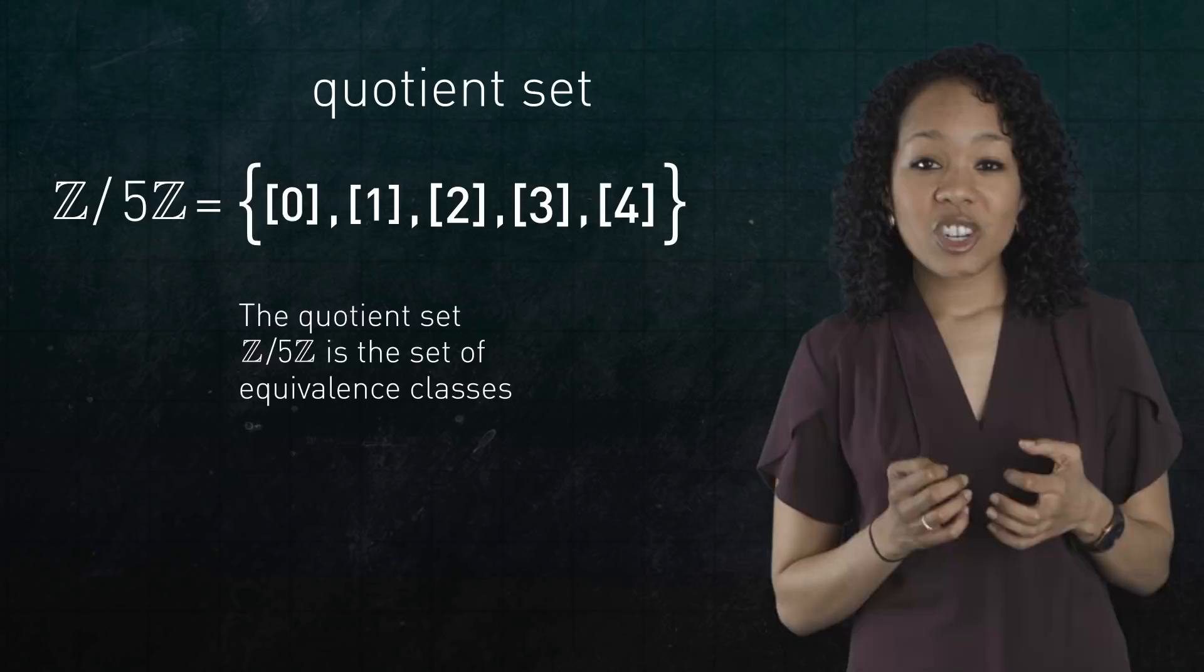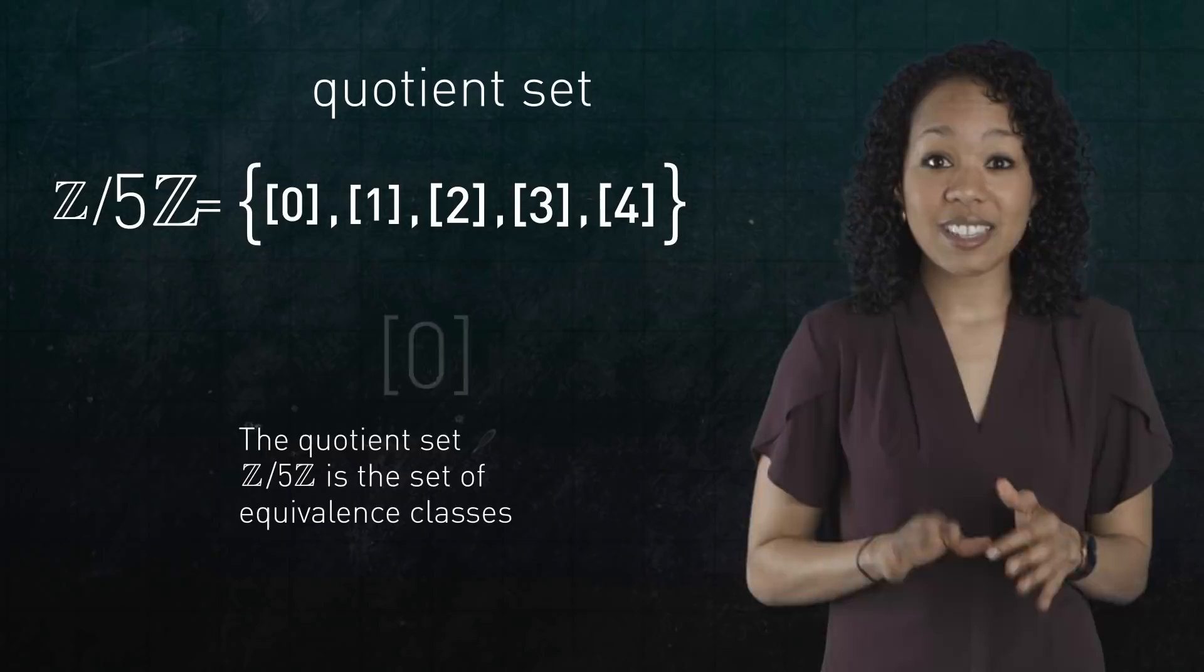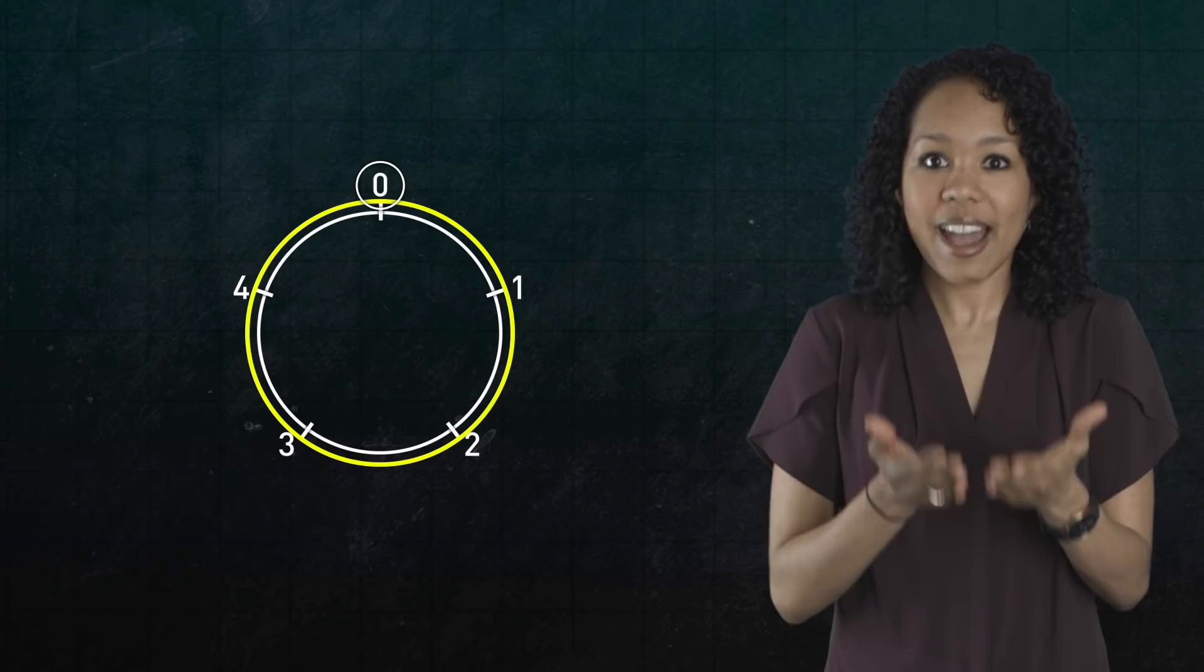By organizing the integers according to their divisibility by 5, we are essentially dividing out the integers by all multiples of 5, 5z. But remember, 5z is really the equivalence class 0. So in that sense, we're dividing by 0. After all, in modular arithmetic, adding or subtracting by any multiple of 5 doesn't do anything. Multiples of 5 act like 0.